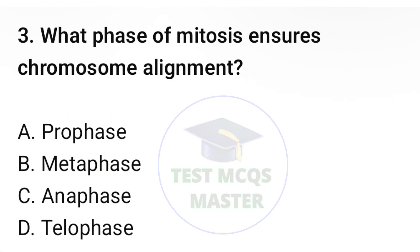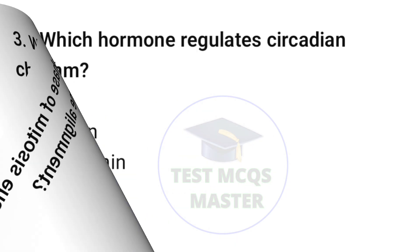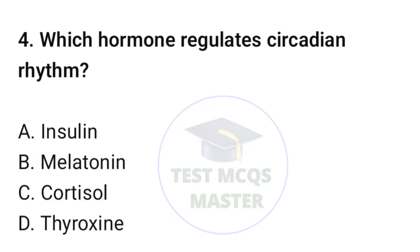Question number three: what phase of mitosis ensures chromosome alignment? The correct option is B, metaphase. Question number four: which hormone regulates circadian rhythm? The correct option is B, melatonin.